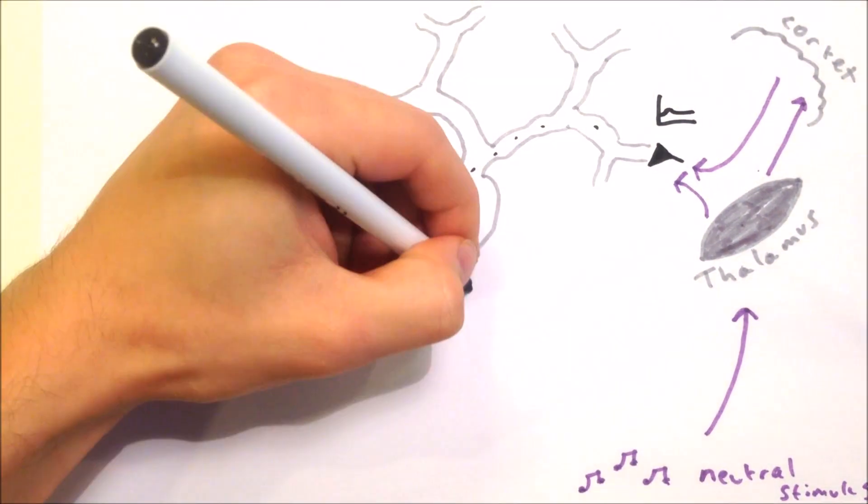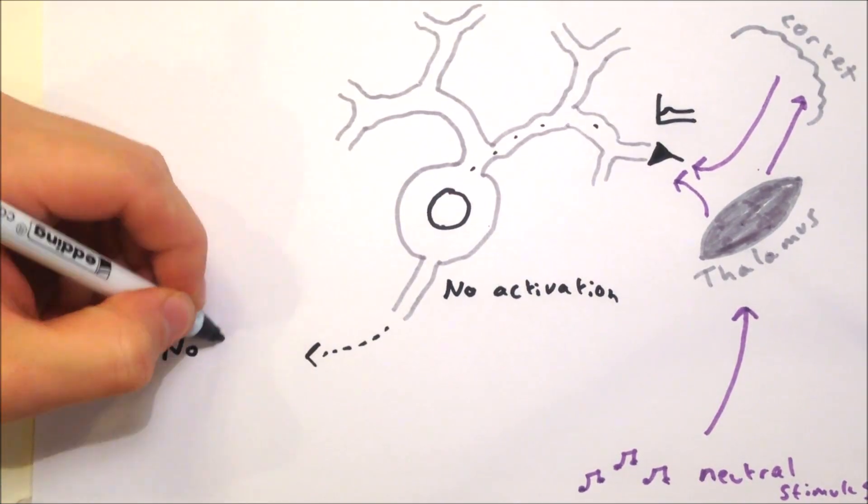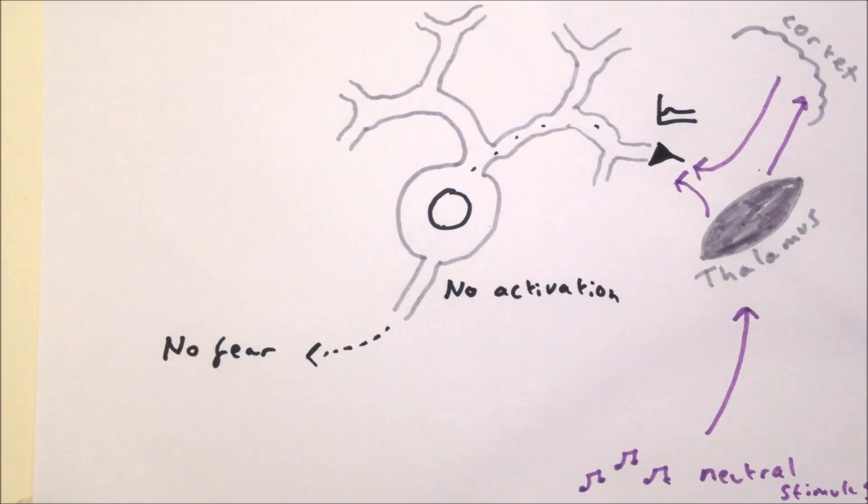However, the inputs from the neutral stimulus alone are not strong enough to cause the lateral amygdala neurons to depolarise, so the central amygdala neurons remain unstimulated and no fear is displayed.